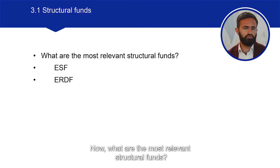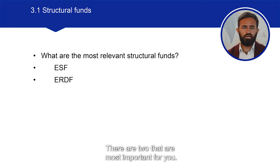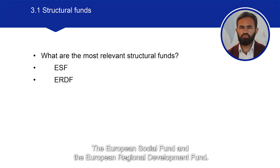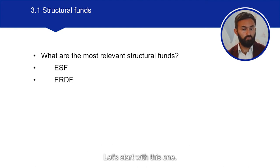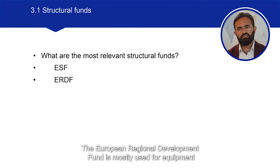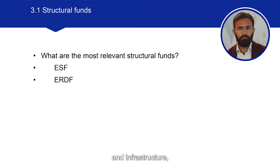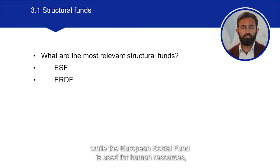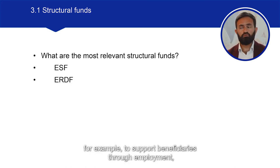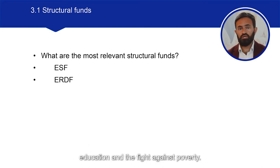What are the most relevant structural funds? There are two that are most important: the European Social Fund and the European Regional Development Fund. The European Regional Development Fund is mostly used for equipment and infrastructure, whilst the European Social Fund is used for human resources — for example, to support beneficiaries through employment, education, and the fight against poverty.